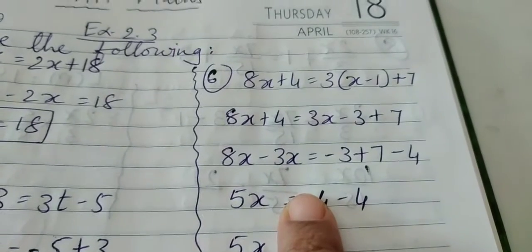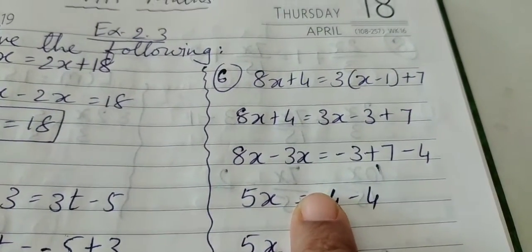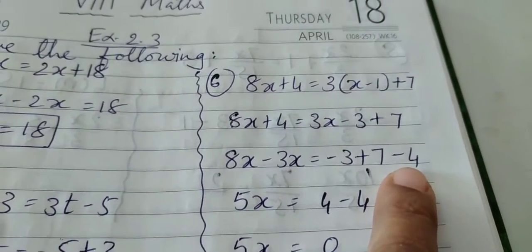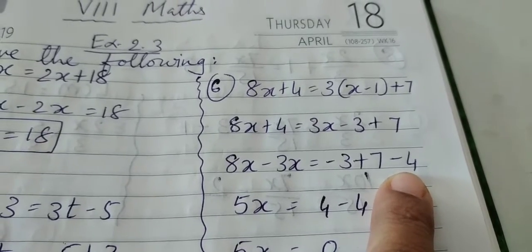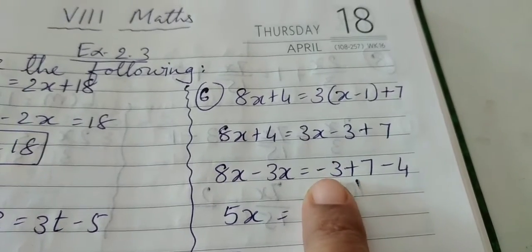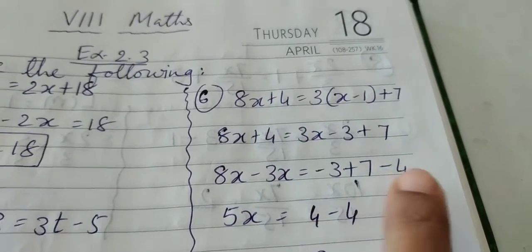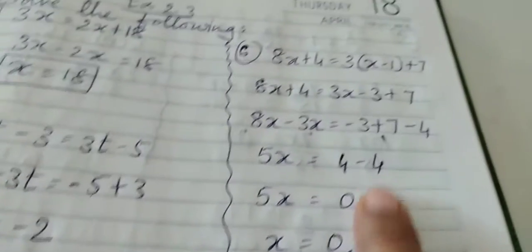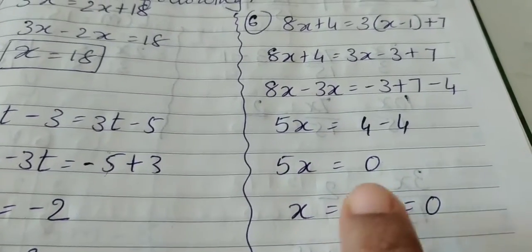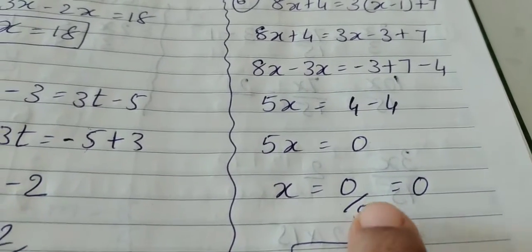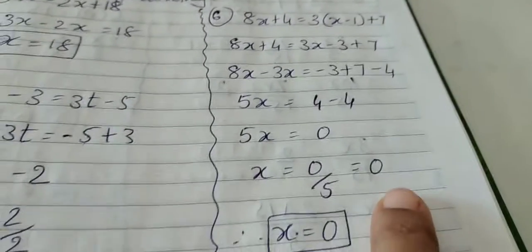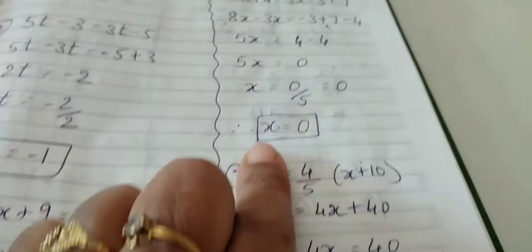Then rest of the solution is as the earlier sums which you have seen. 8x minus 3x is equal to minus 3 plus 7 minus 4. Directly I will show you minus 3 plus 7 positive 4. Positive 4 minus 4 gives you 0. Here 8 minus 3 is 5. 5x is equal to 0 and x is equal to 0 divided by 5. When 0 is divided by any number the answer is 0. Therefore x is equal to 0.